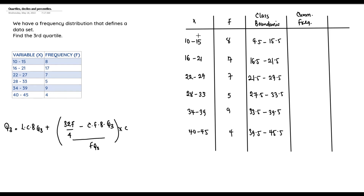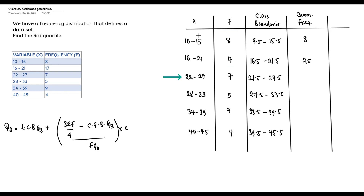The cumulative frequency is the sum of the frequency of a class and all frequencies before it. Starting with 10–15, the frequency is 8, so the cumulative frequency is 8. For 16–21 the frequency is 17, so the cumulative frequency is 8 + 17 = 25.